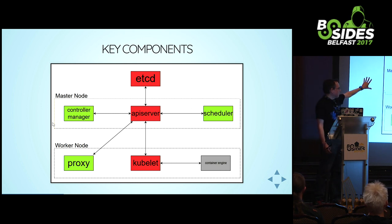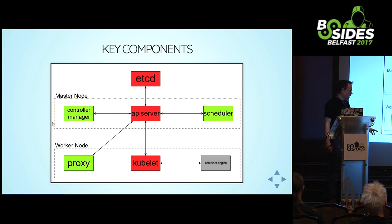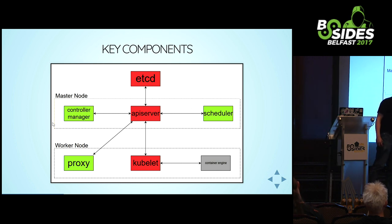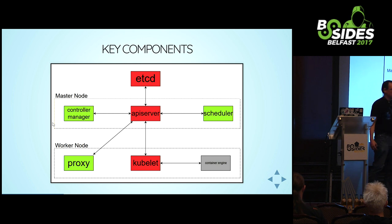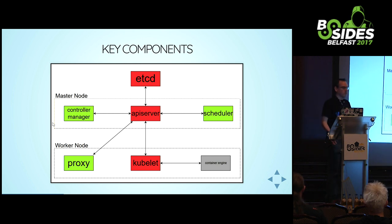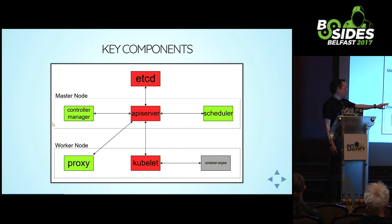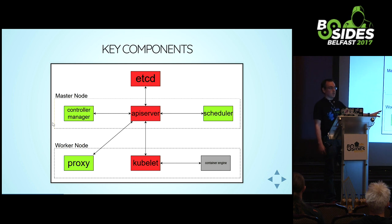Then there's the master node with the API server, plus a number of worker nodes - you can have up to 200. Each worker node has a kubelet process that talks to the API server and says 'create me a container for this image,' then instructs the container engine - usually Docker - to pull and run it. The kubelet runs on every worker node and has authority to create new containers. From a security standpoint, if you can interact with the kubelet, you can mess with the cluster.